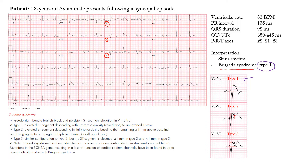Looking at the EKG, we see a sinus rhythm. The patient has upright P waves in the lateral leads and some inferior leads with similar morphology throughout. The ventricular rate is 83, which the machine confirms — so this is a normal sinus rhythm.